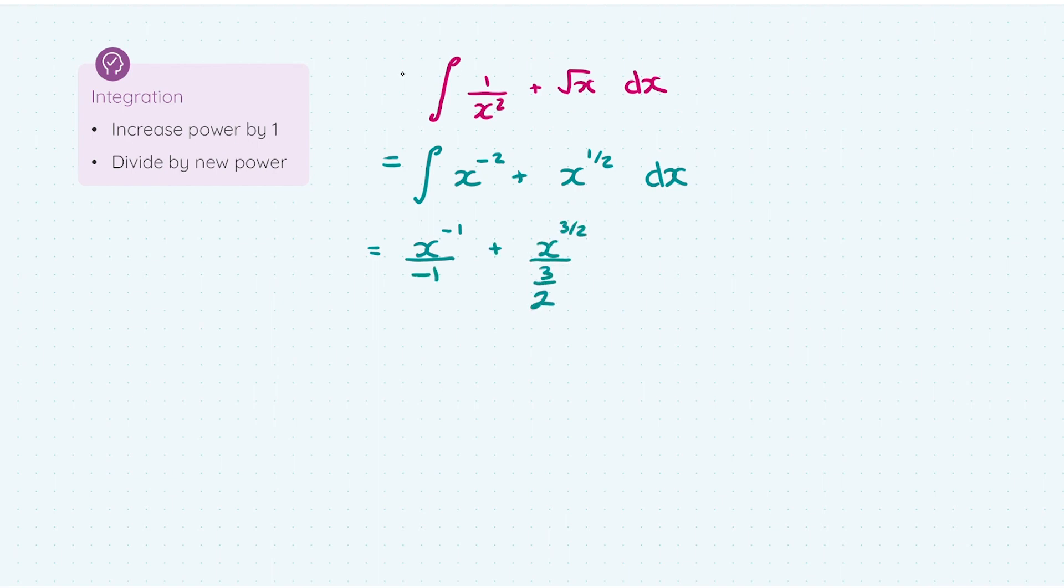So I was being extra careful there when we increased -2 by one, it became -1. So just be wary of that and divide it by -1. And similarly, if you're no good with adding your fractions, so a half plus one becomes three over two, use the calculator to check that out. We can tidy this up then.